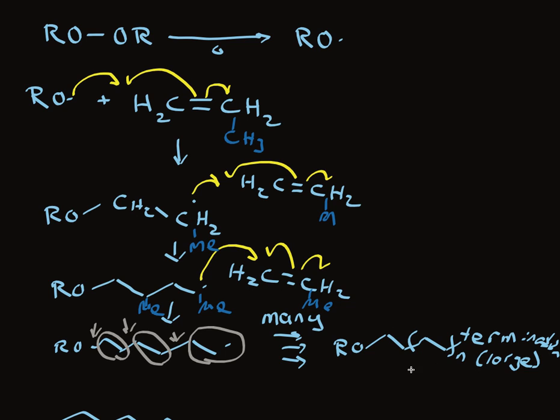Ultimately you have a chain that's very long with methyl groups sticking off of it. This might not be methyl. If it is methyl, by the way, we make a compound called polypropylene.